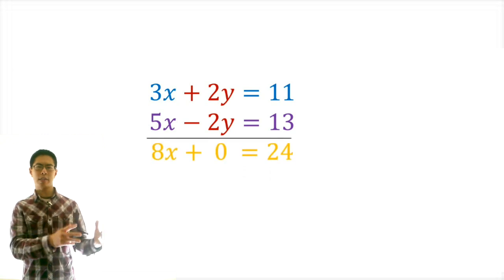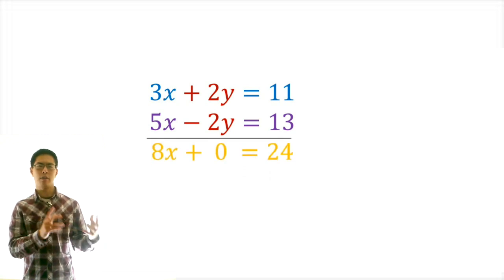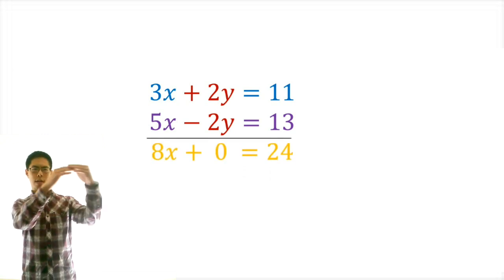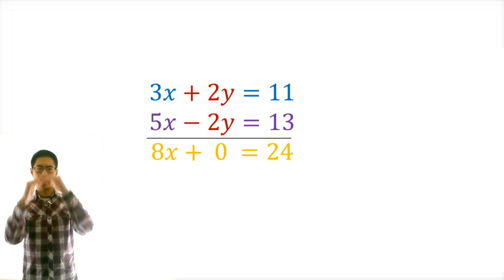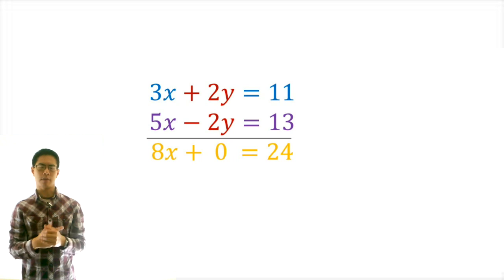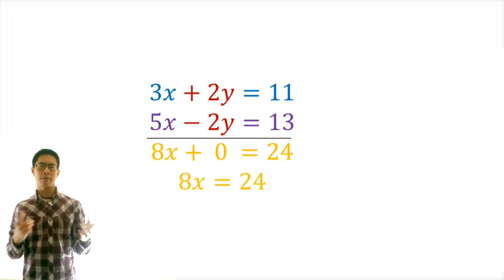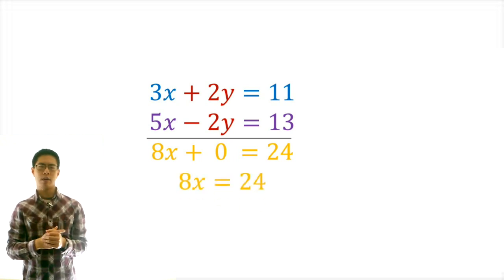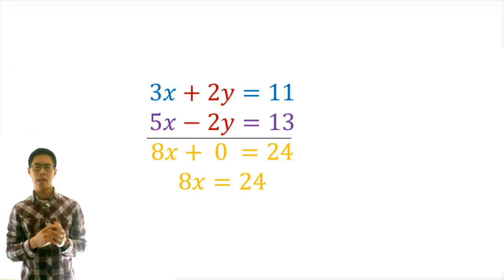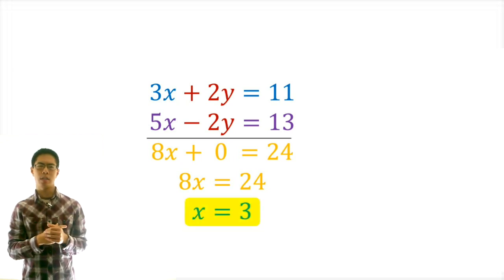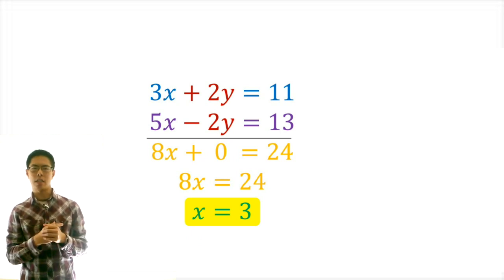Step 3, we add the two equations together. To do this, we just add downwards: 3x plus 5x equals 8x, 2y plus negative 2y equals 0, and 11 plus 13 equals 24. So after we add these two equations together, we end up with 8x equals 24. Step 4, we solve for the remaining variable. We just need to divide both sides by 8, which gives us x equals 3.